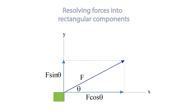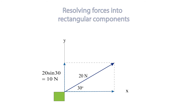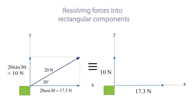If we put actual values in — theta is equal to 30 degrees and F is equal to 20 newtons — then the component of our vector in the Y direction is 10 newtons, and the component of our vector in the X direction is 17.3 newtons. Equivalently, if we have a force pulling on the object in the X direction with 17.3 newtons, and a force pulling in the Y direction with 10 newtons, then this will have exactly the same effect as a force pulling the object with 20 newtons at 30 degrees to the horizontal. And that's what's meant by the rectangular components of a vector — in this case, a force vector.